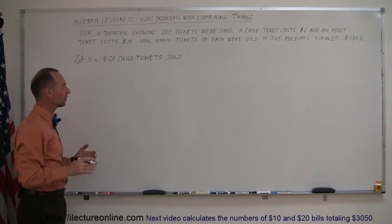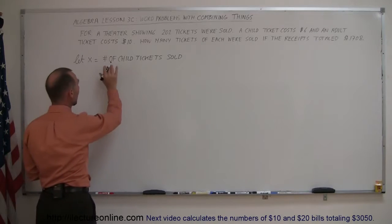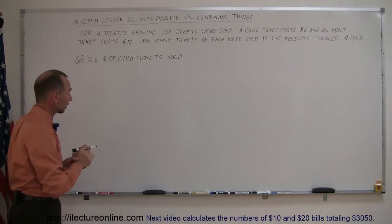Now, you say, well, why do I write all that down? It actually makes a lot of sense to be very definitive about what X represents. It's the number of children tickets or child tickets sold.